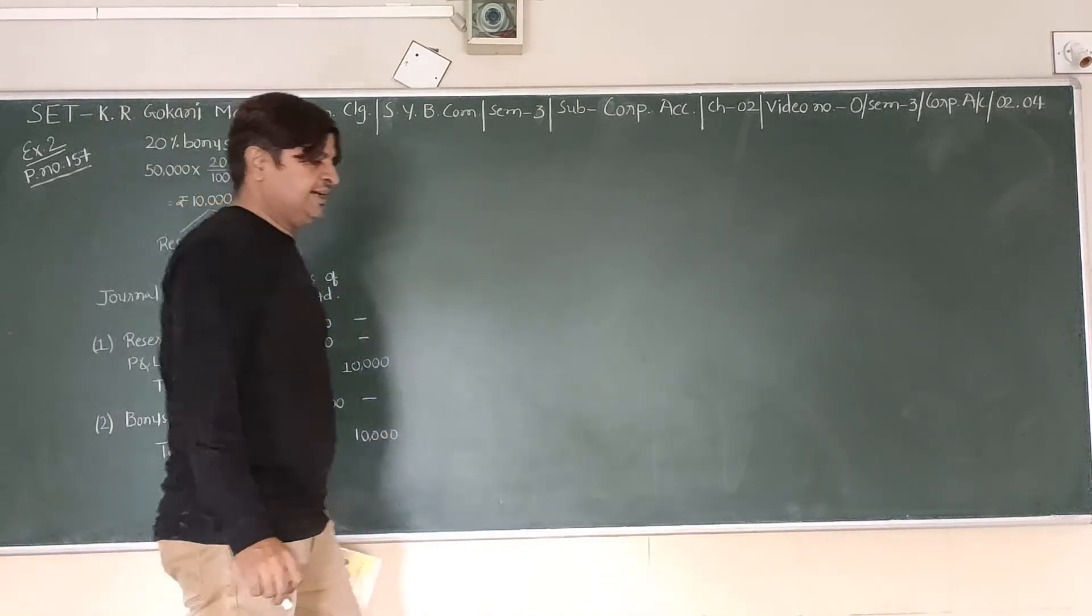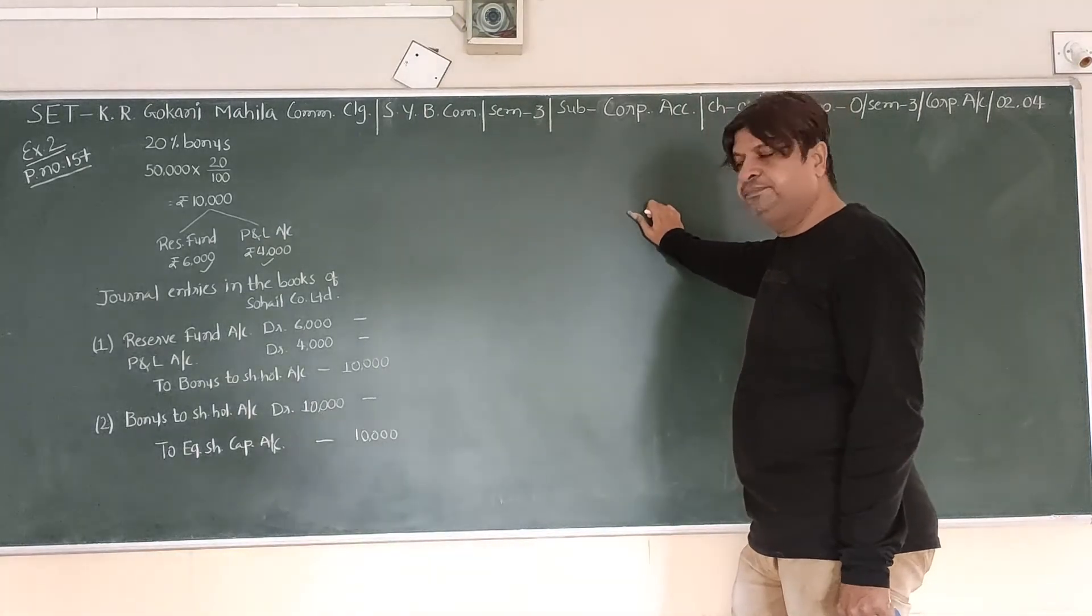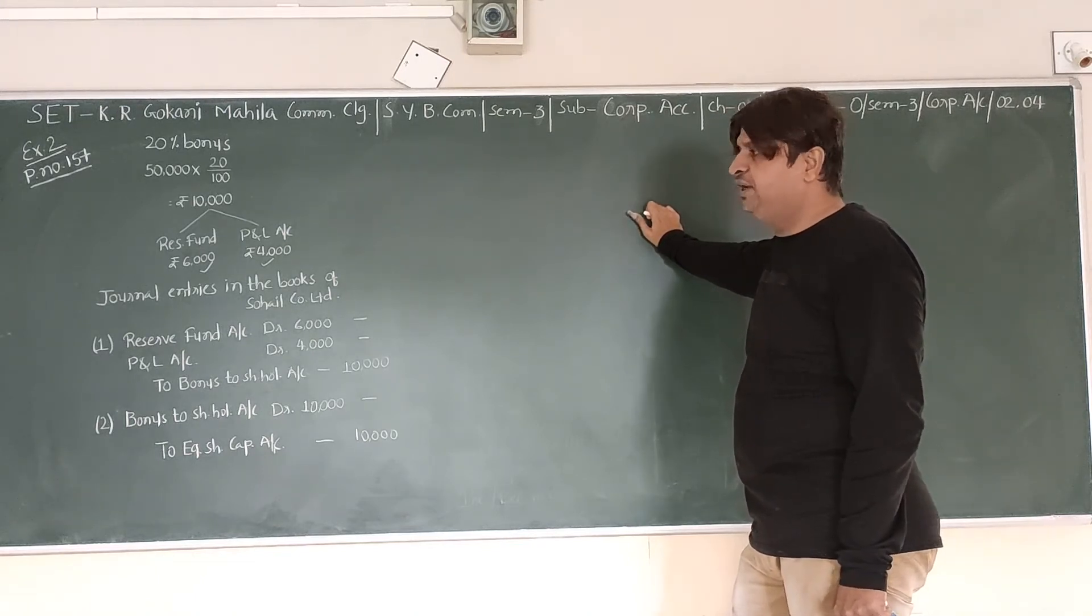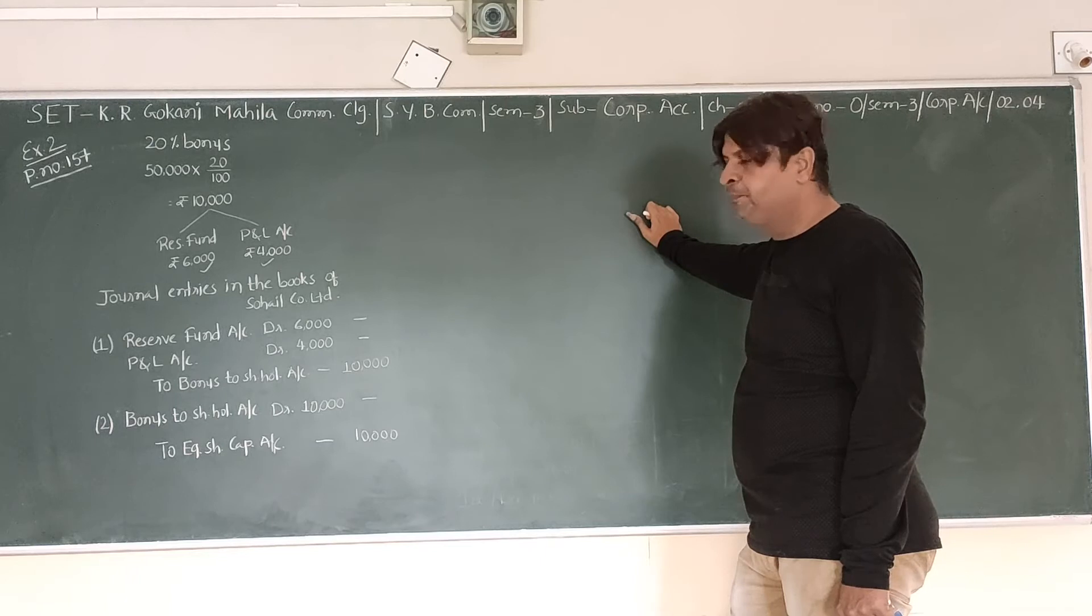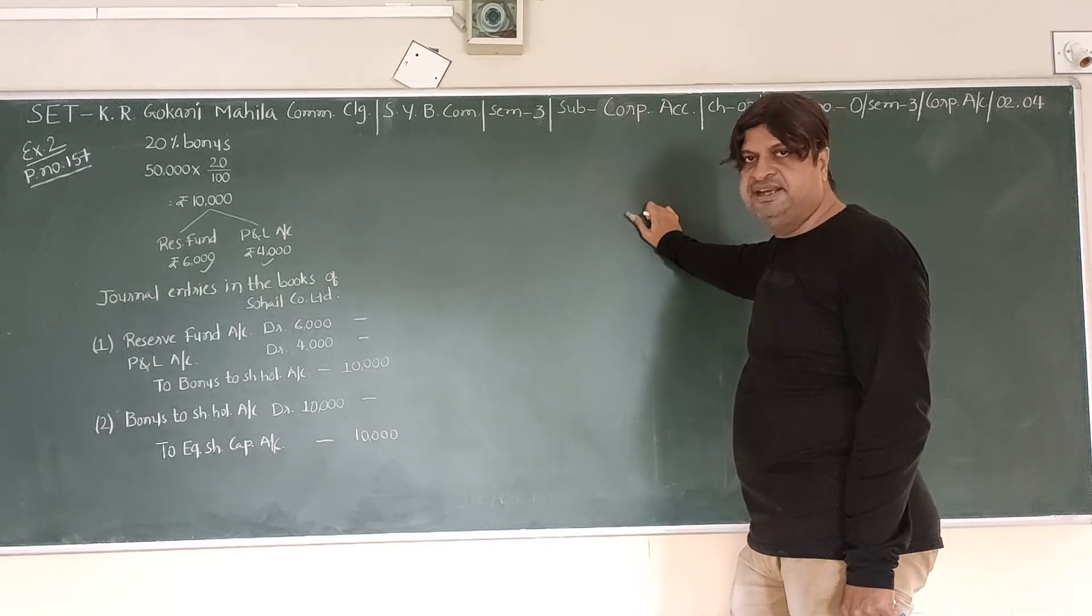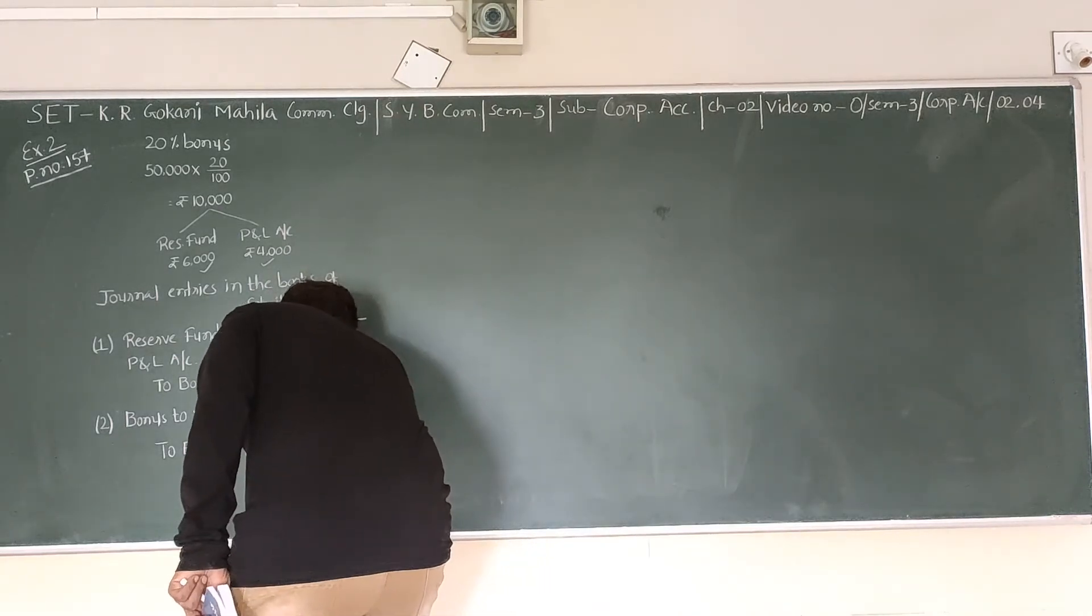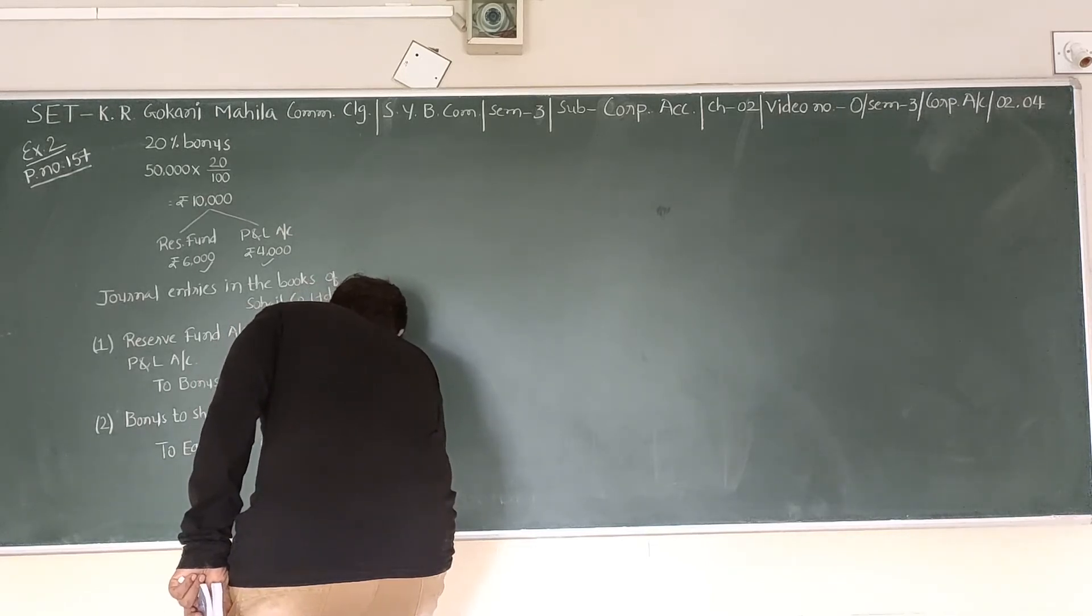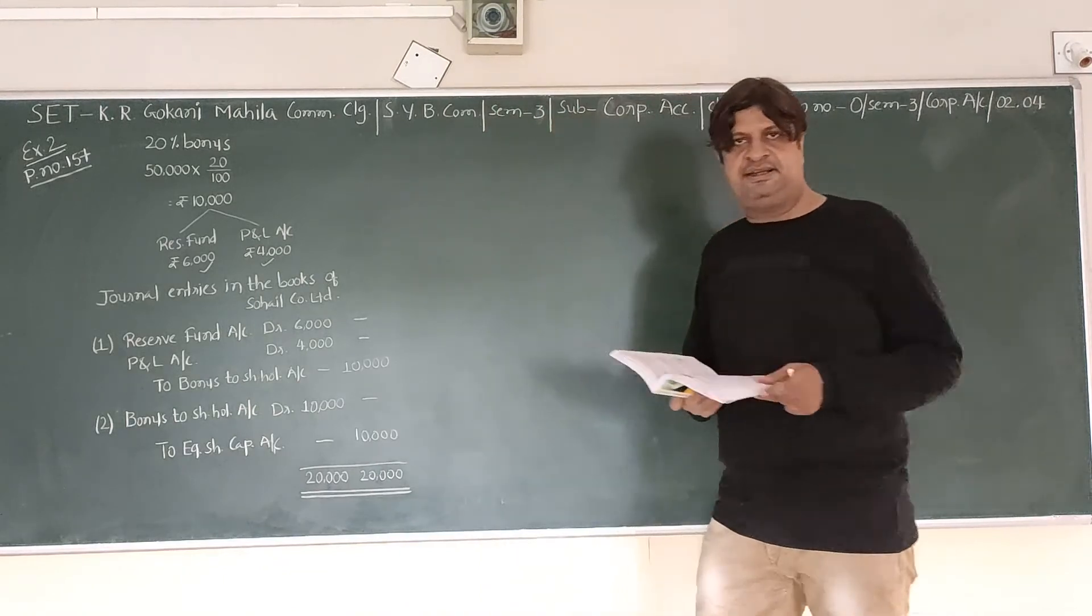So to Equity Share Capital account credit 10,000 rupees. Write down the narration: Being one share is issued as bonus against 5 shares held.